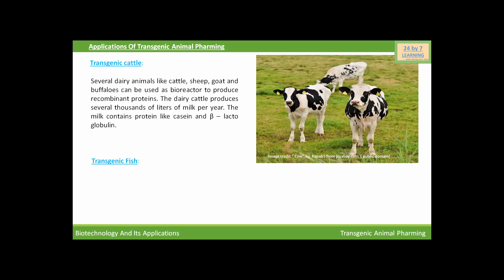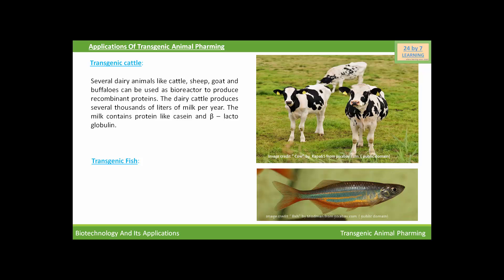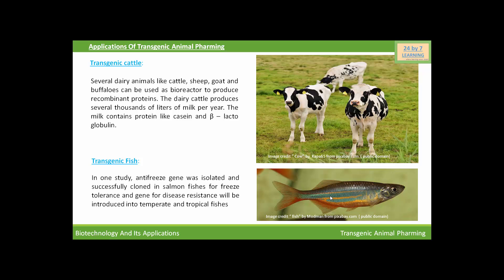Now, come to transgenic fish. In a study, an antifreeze gene was isolated and successfully cloned in salmon fishes for freezing tolerance. And genes for disease resistance will be introduced into temperate and tropical fishes.